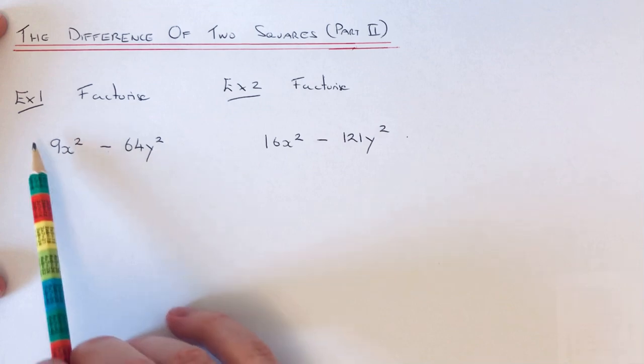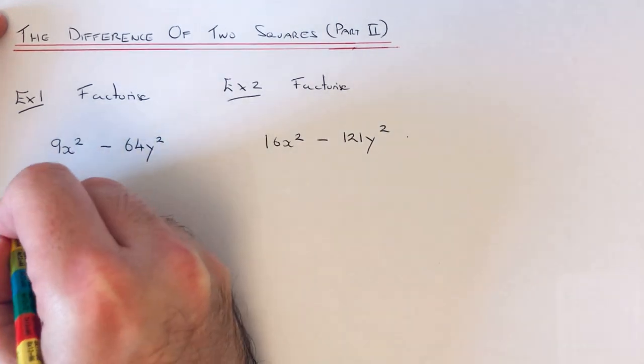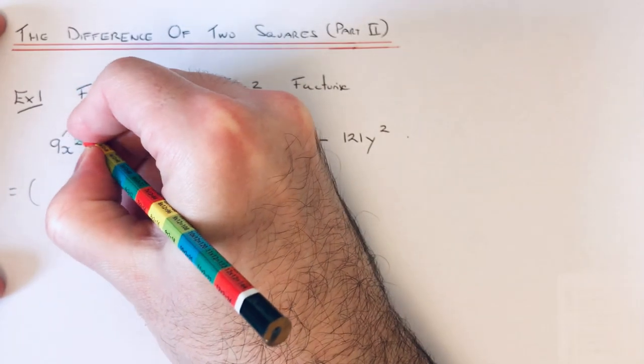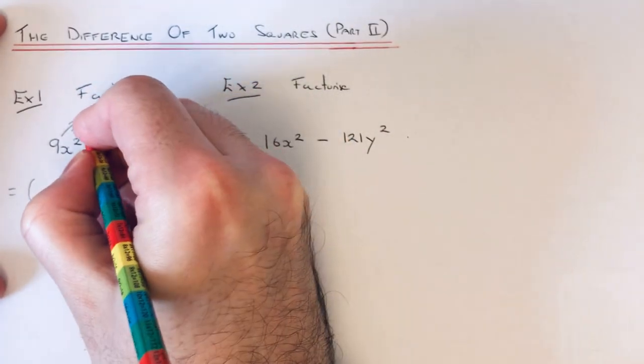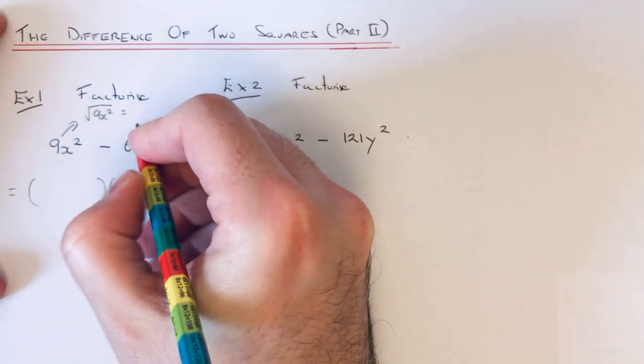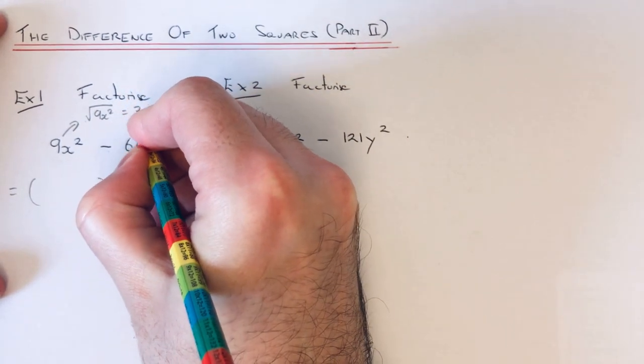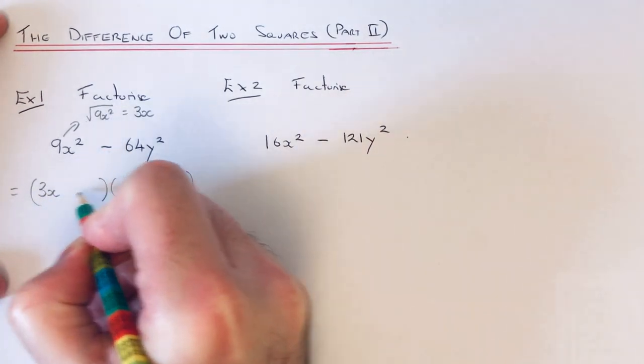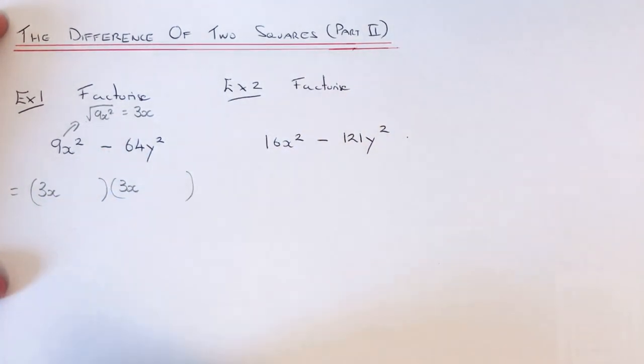So these ones go into double brackets. Okay, and what you do first then is you square root 9x squared. So the square root of 9x squared will be 3x, that's because 3x times 3x is 9x squared. So you put the 3x at the start of each bracket.